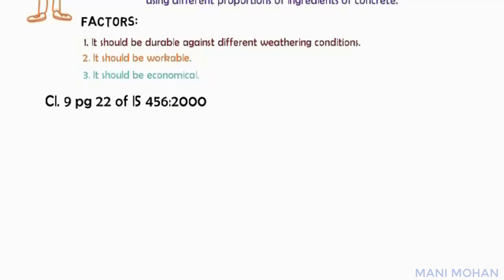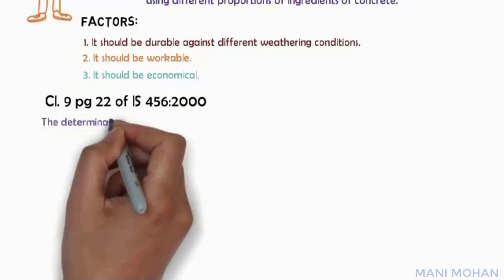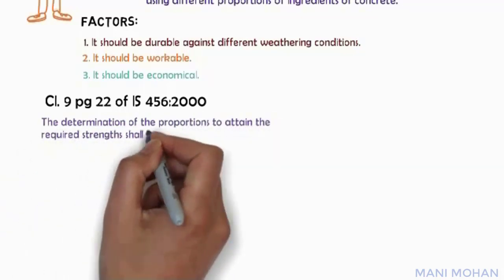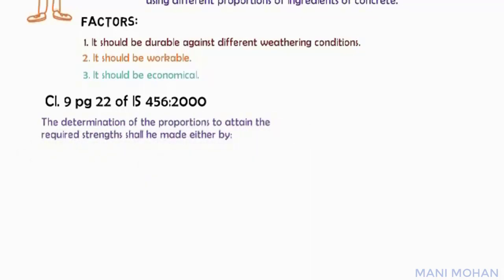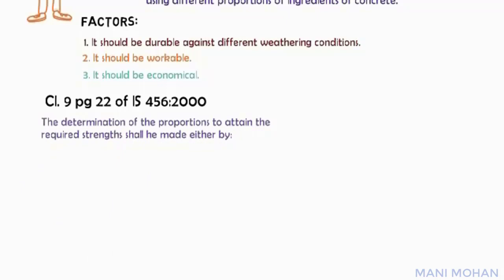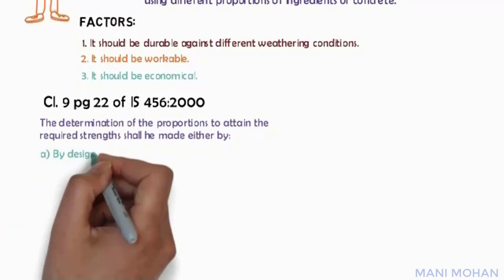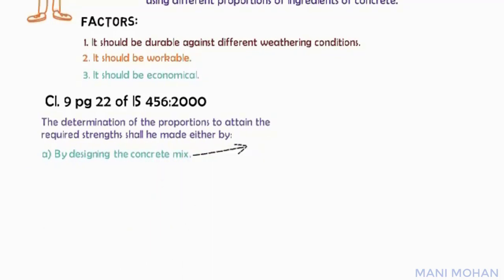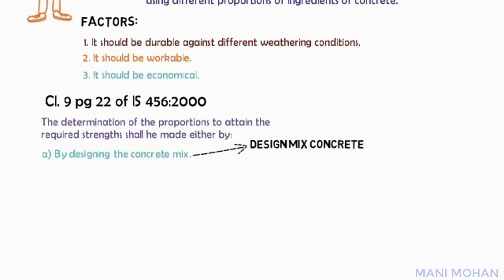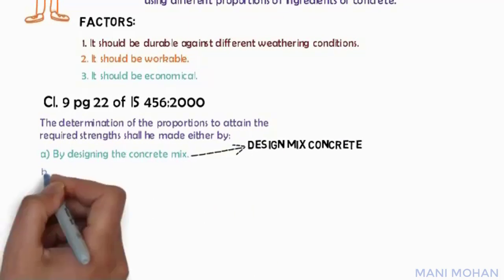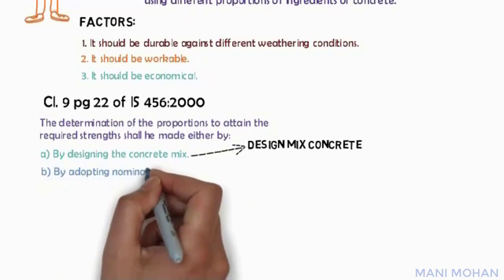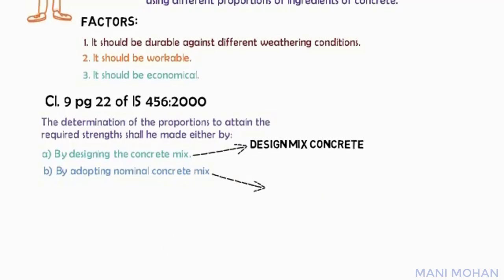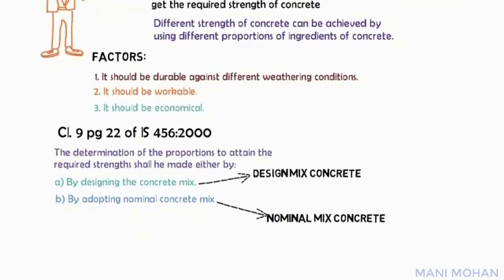As per the code, the determination of the proportion of cement, aggregates, and water to attain the required strength of concrete is specified. Clause 10, page 22 of IS 456-2000 provides the required strength of concrete. By adopting nominal concrete mix, such concrete shall be called nominal mix concrete.